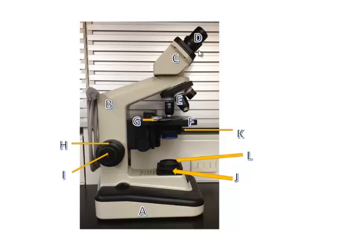Here we have the ocular lens. Here we have the objective lenses. In order to get the total magnification of an object, you take the ocular lens magnification and multiply it by the magnification of the specific objective lens that you are using.